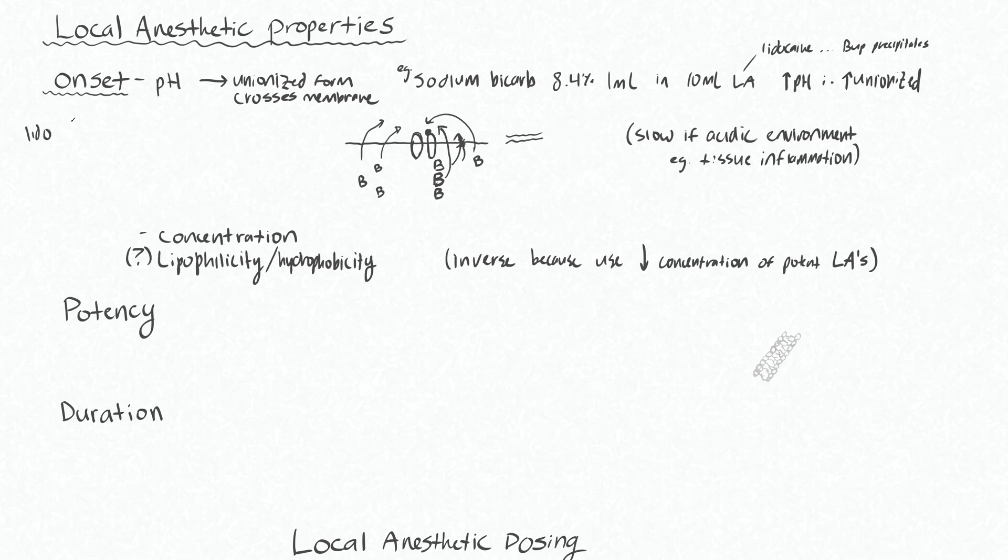The lipophilic anesthetics are very potent, and since they're very potent you need less of them, therefore you use a lower concentration. So lidocaine has a relatively faster onset than bupivacaine because we use it in high concentrations, or relatively higher concentrations, whereas bupivacaine, which is a very lipophilic local anesthetic, and would in theory diffuse quickly into a neuron, actually has relatively slower onset because we use low concentrations of it.